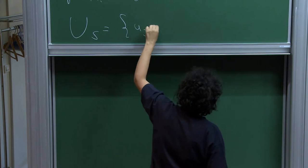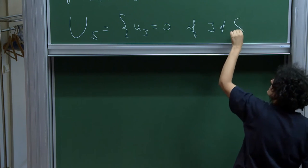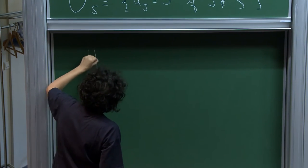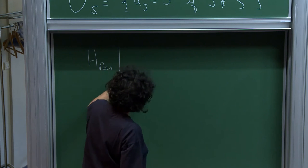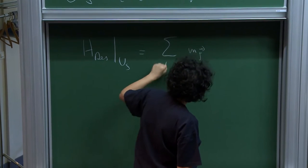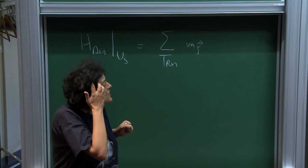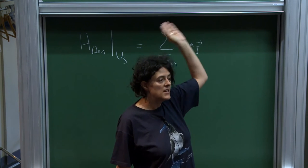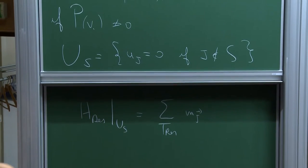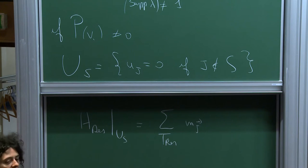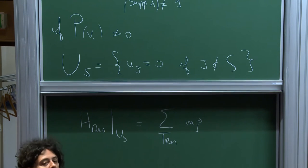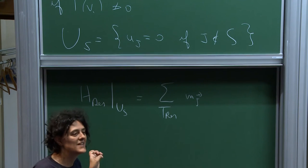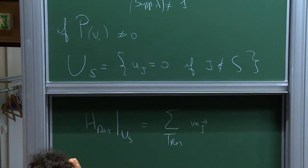This subset is invariant, and very importantly: if you restrict to U_S, then you have only the trivial resonances. This says that the dynamics on H_res is trivial — it lives on tori — and surely you cannot have any diffusive behavior. Also, if you choose n points in Z^2 randomly, you will surely get them in such a way that this polynomial is not zero.